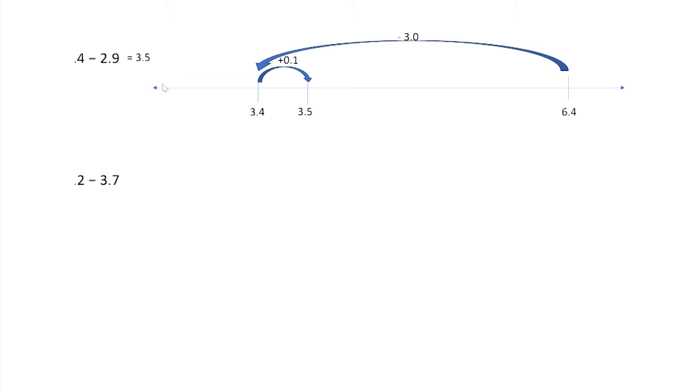Let's look at the next problem. Now we have 7 and 2 tenths minus 3 and 7 tenths. Go ahead and solve that on your paper. Again, discuss with anyone who is watching with you. Go ahead.